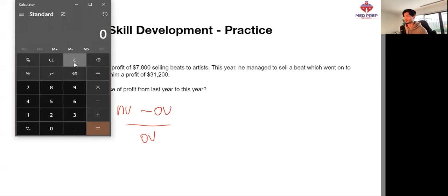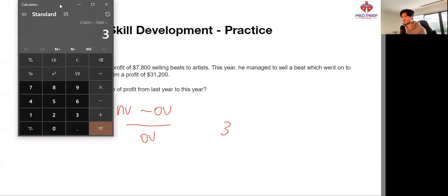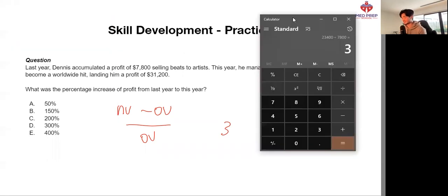So bringing up the calculator, $31,200 minus $7,800 gives us this number. And we're just going to divide that by $7,800 again. $3. What does this $3 actually mean? It means that if we interpret this as 3.00, that there was a 300% increase in our profits. So essentially, that is our answer here. The answer is D.